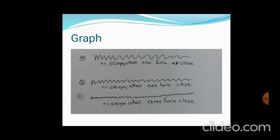These typical graphs are obtained after oscillation. When n equals 600 RPM and one hole is open, maximum amplitude is observed with less damping. When two holes are closed at the same RPM, more damping is provided and amplitude decreases. When three holes are closed at 600 RPM, maximum damping is applied, resulting in the least amplitude.